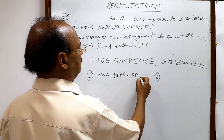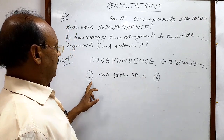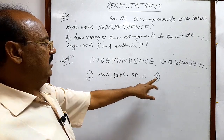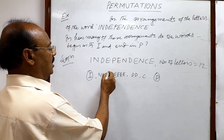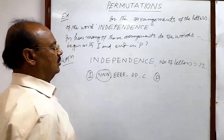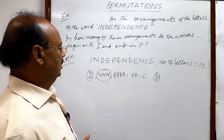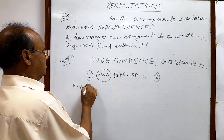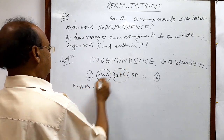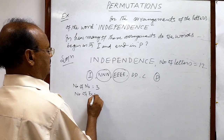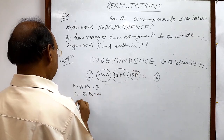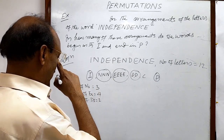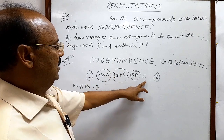And 1 letter is C. Total should be 12. These are the objects of the same nature — they are alike. So number of N's is 3. Similarly, number of E's is 4. Number of D's is 2. And 1 I, 1 C, 1 P.